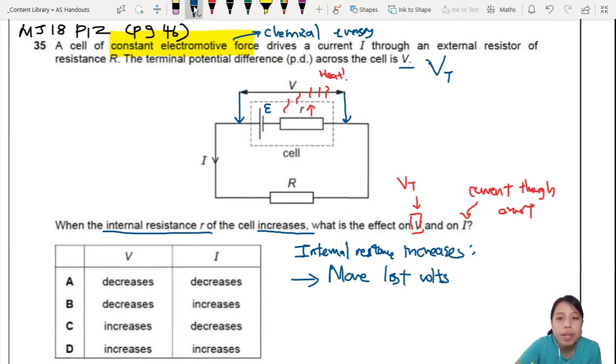So, more lost volts also mean your terminal potential difference will be lower already. So, terminal potential difference is now lower or smaller. So, that means our V here will decrease. So, decrease, decrease, this one's out already. So, it's either A or B. Decrease.